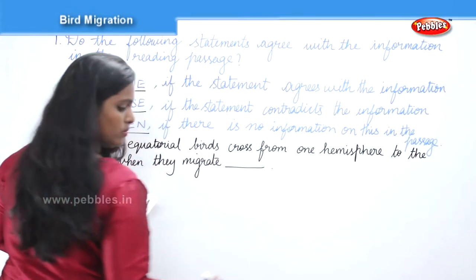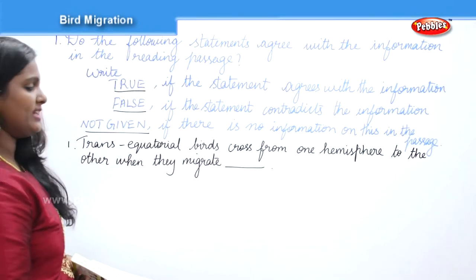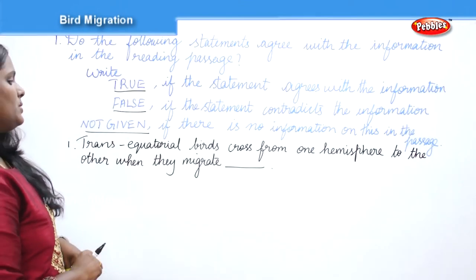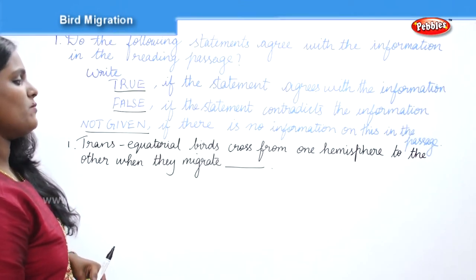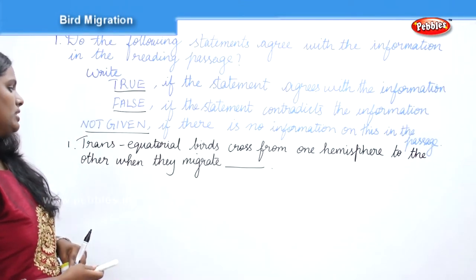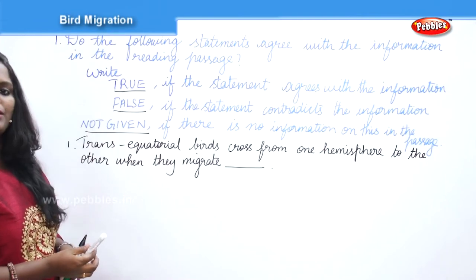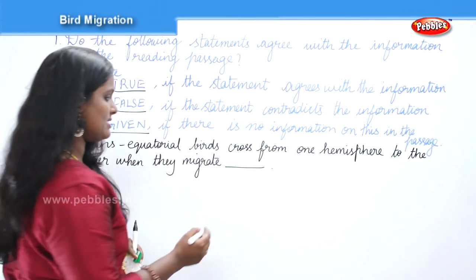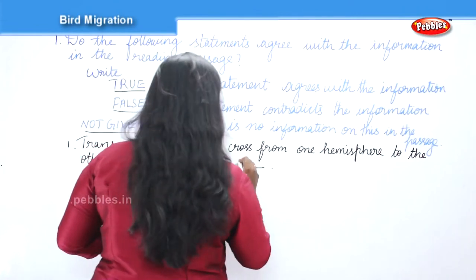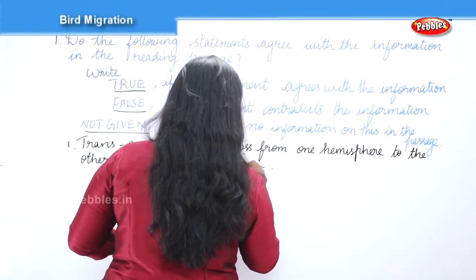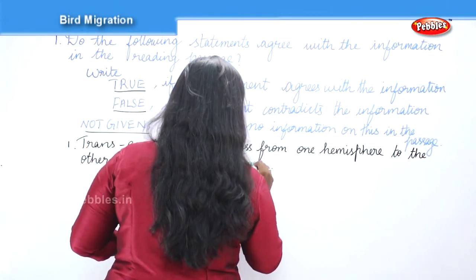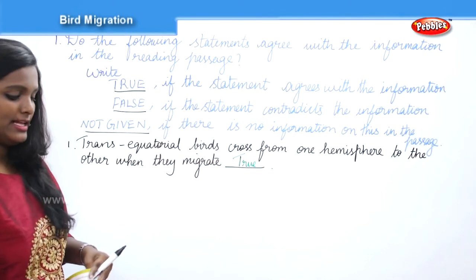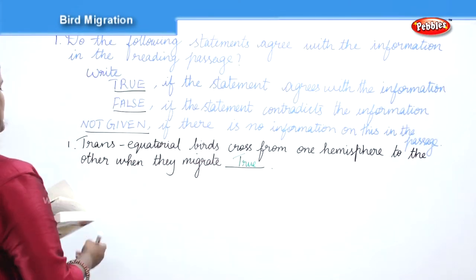Statement: 'Trans-equatorial birds cross from one hemisphere to the other when they migrate.' Is this true or false? The passage clearly states this, so the answer is TRUE.